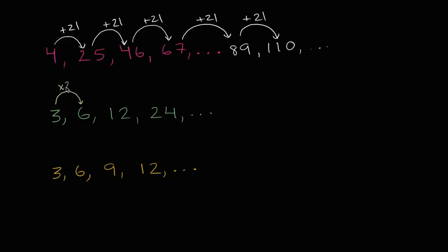So I multiply by two to get from three to six. And if I multiply by two again, I go from six to 12. Six times two is 12. And if I multiply by two again, I'll go to 24. Two times 12 is 24. And I could keep going on and on. Two times 24 is 48 and 96.